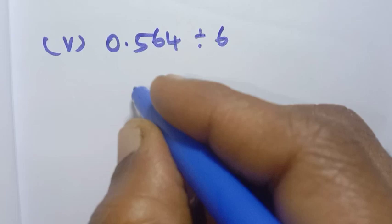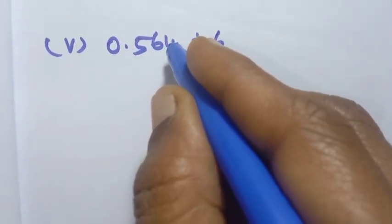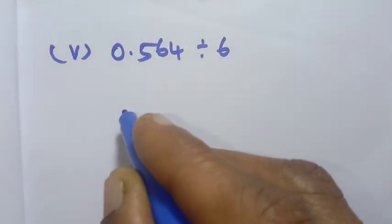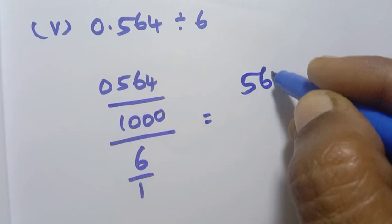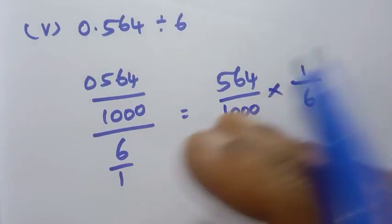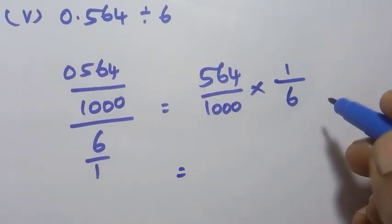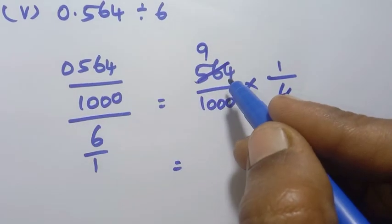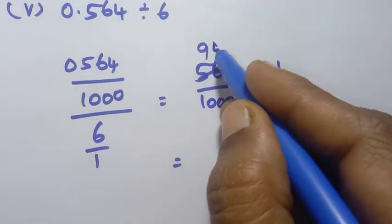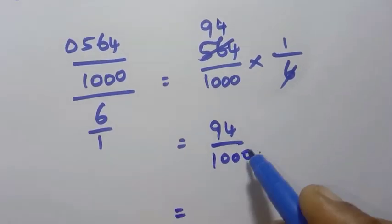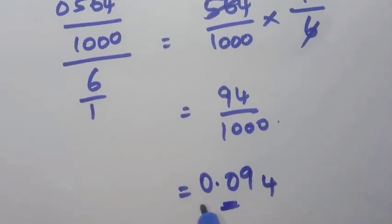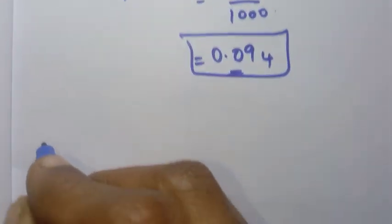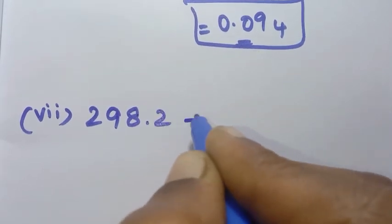Fifth question: 0.564 divided by 6. How many decimal places? 1, 2, 3 — so 0.564 is 564 by 1000. Divided by 6 by 1, giving 564 by 1000 into 1 by 6. Cancel 6: 6 nines are 54, remainder 2; remaining 24 — giving 94 by 1000. So the answer is 0.094.